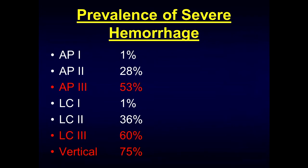It's important to remember that you can get severe intra-abdominal and intra-pelvic hemorrhage. The most common injury patterns associated with severe hemorrhage are the vertical type injuries, followed by lateral compression 3, and then AP compression 3. So keep that in mind and look for signs of hemorrhage.